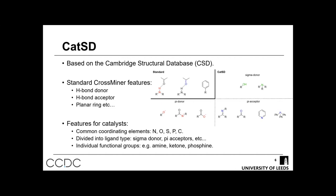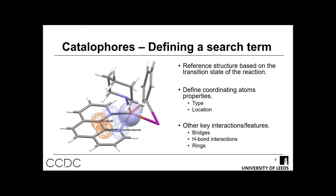We can't use the default feature database that comes with the CSD, so I've been developing a new structural database for catalysis. This is similar to the default CrossMiner feature database and contains standard features such as hydrogen bond donors, hydrogen bond acceptors, and planar rings. But because we're applying this to catalysis, we need new features to identify key ligand properties. The new structural database includes the ability to identify coordinating elements such as nitrogen, oxygen, and phosphorus compounds, divided into ligand types — sigma donors or pi acceptors — with fine tuning down to the functional group level.